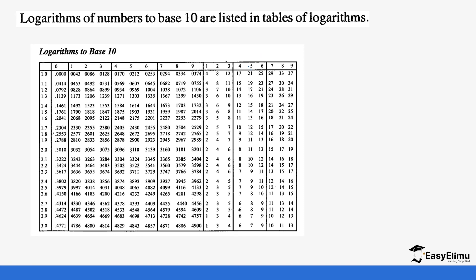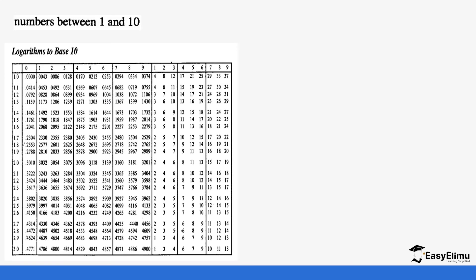Let's do a few examples so you can see how we read these logarithm tables. Note that in the logarithm table, the differences section represents addition, unlike the reciprocal table where we subtract. We will start with numbers between 1 and 10 and then work out different values.